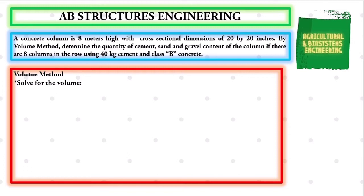To solve for the volume of our column in the problem, we will use the formula: Volume is equal to the product of the height, multiplied to the number of columns, times the cross sectional area.